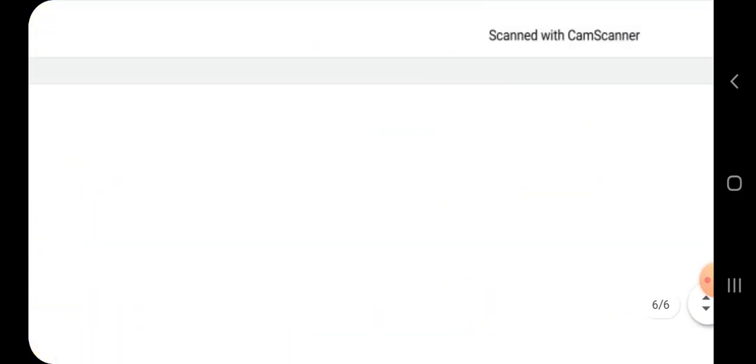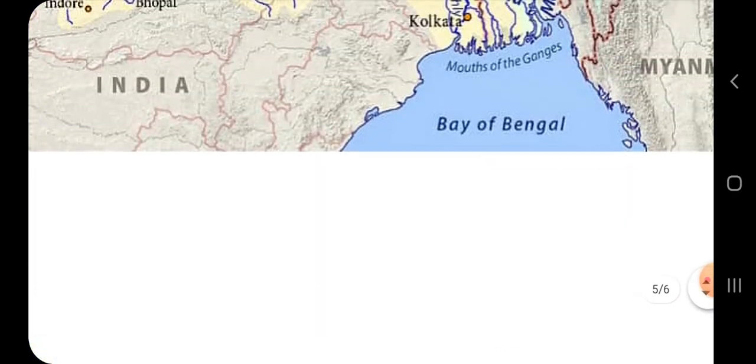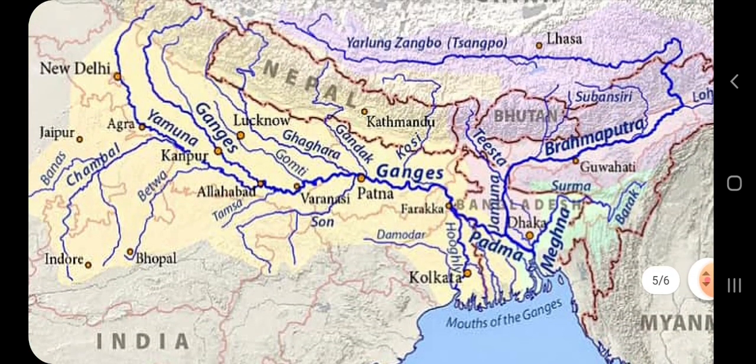These two rivers form a big delta called the Sundarbans delta. The lower part of this region is marshy and is covered with forest. This forest is called the Sundarbans because of the Sundari trees growing here. Mountain streams from all sides join the Brahmaputra.